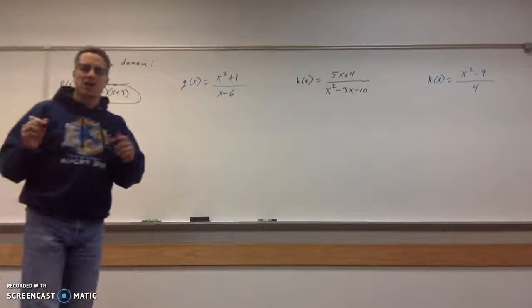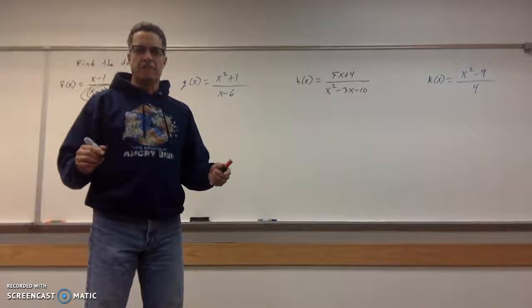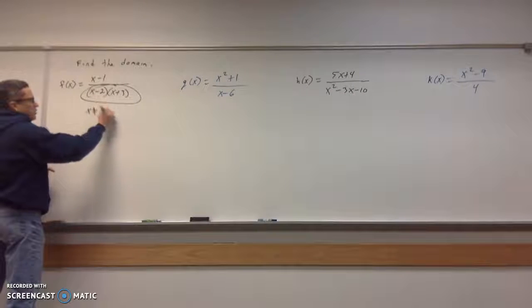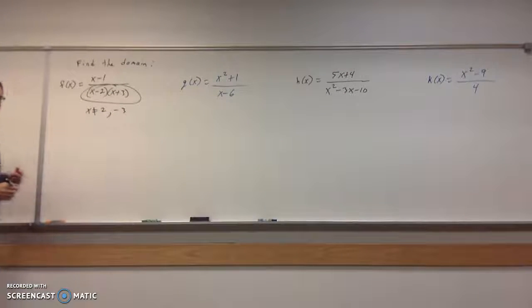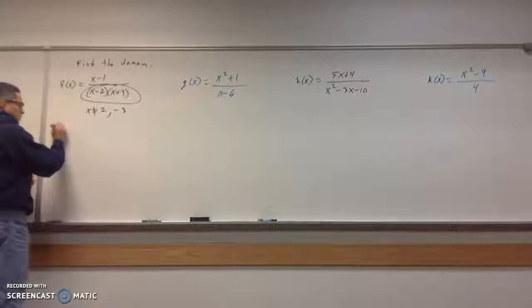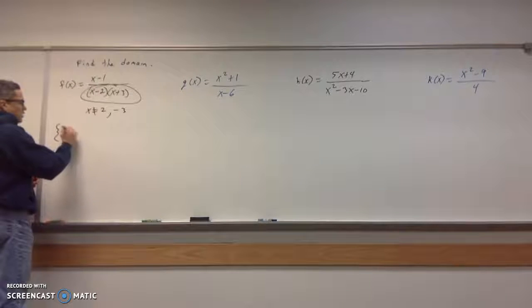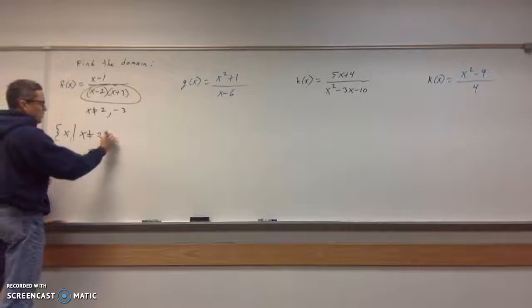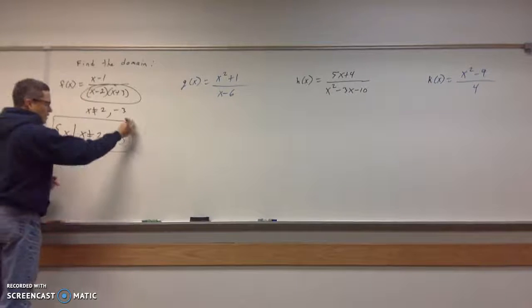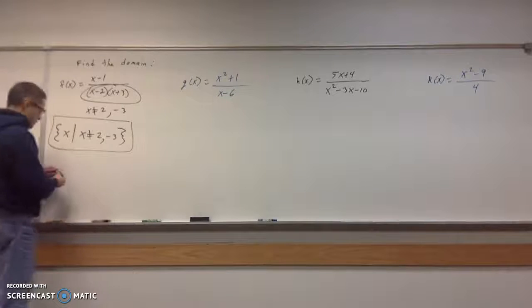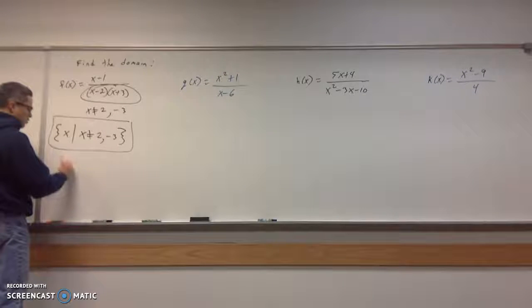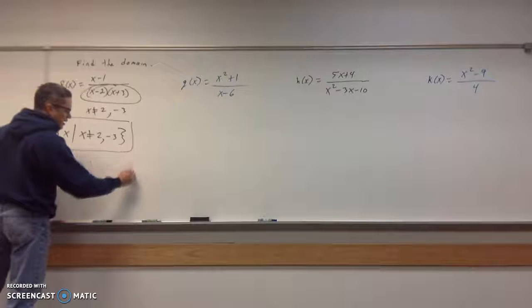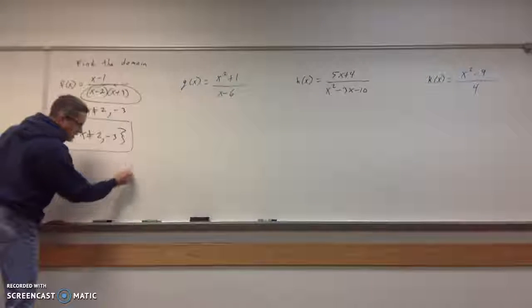When you look at fractions, what can the denominator not be? It can't be zero, right? And that's what I'm after here. What'll make these guys go to zero? Well, it can't be a two. And it can't be a negative three, right? So, we talked about set builder notation in the previous video. That's what I'm going to write my answer for, is using set builder. So x, it's values of x such that x is not two, and x is not negative three.